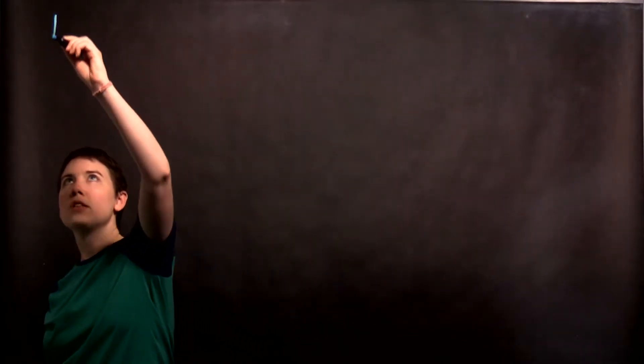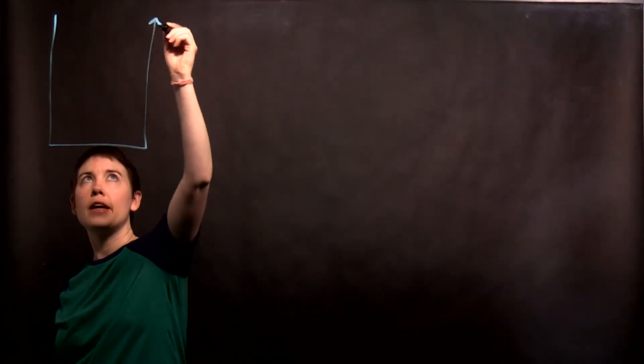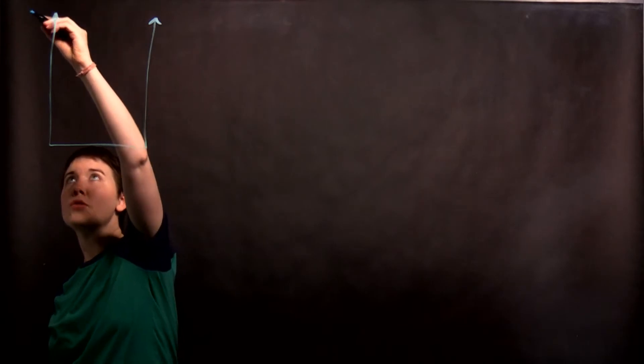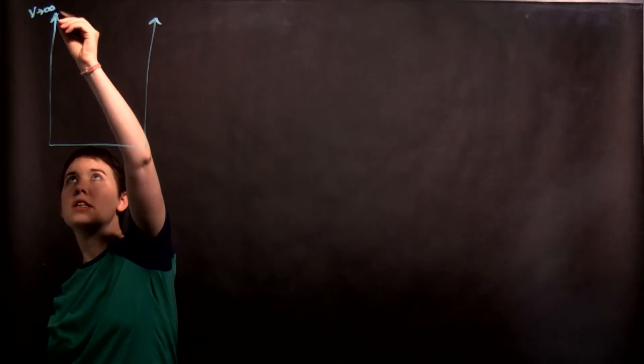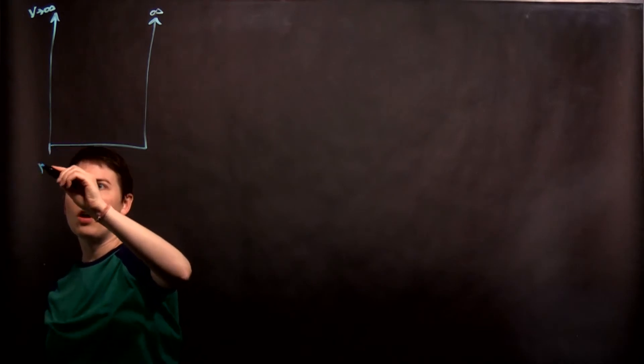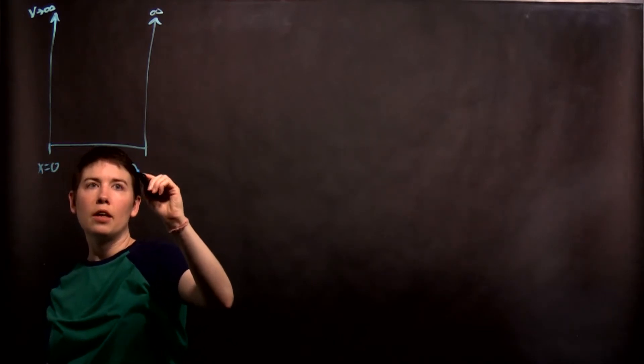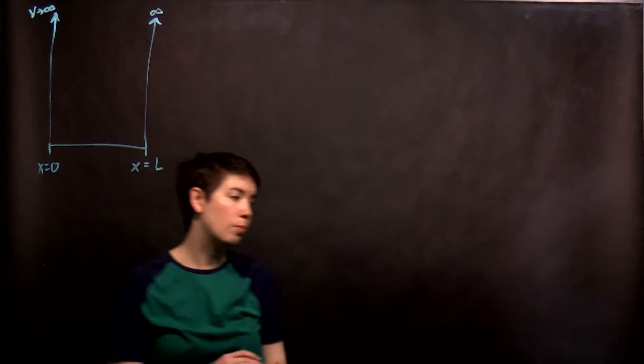So if that's your starting point, we have to say, well, how do we turn that into some math? Okay, so the first thing is we know it's the infinite well, so let's draw that out. All right, so V is going to infinity at our edges. We'll use our x equals zero, x equals L boundaries.